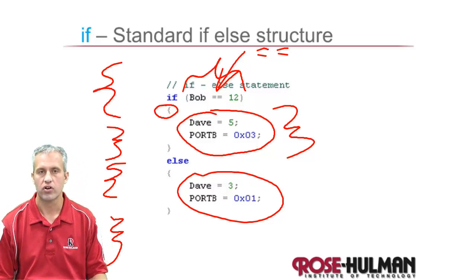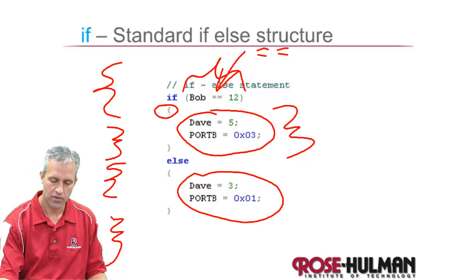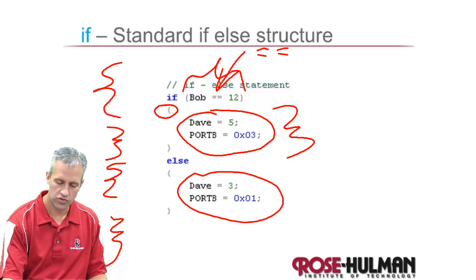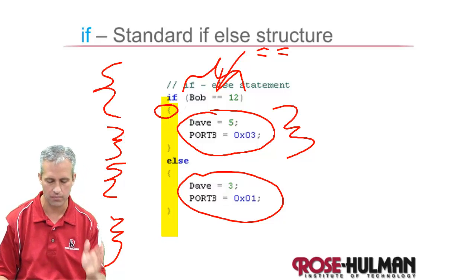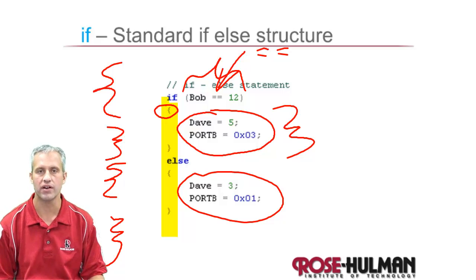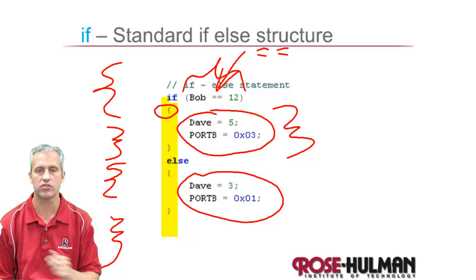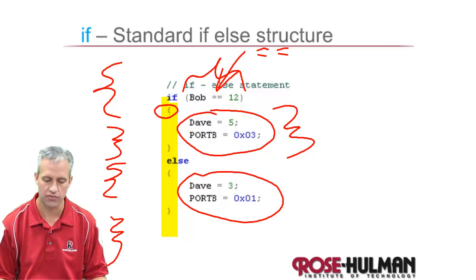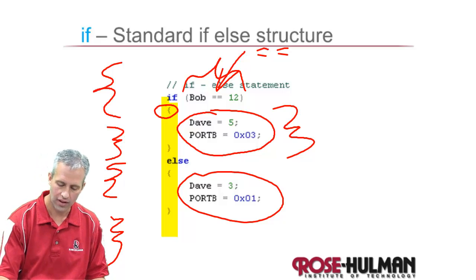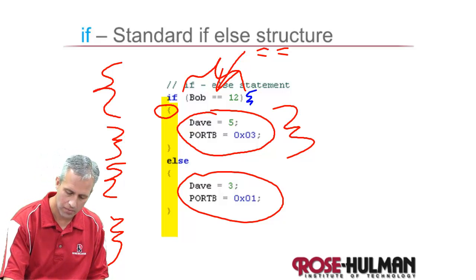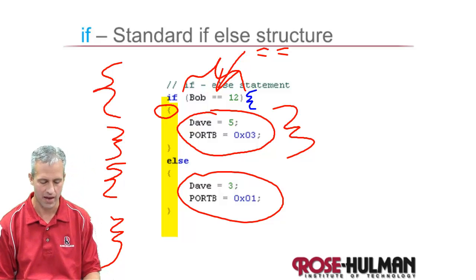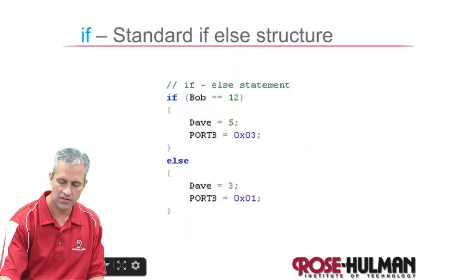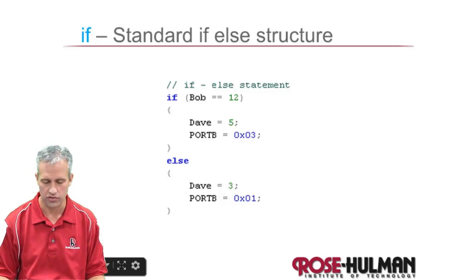So if Bob is 12, it's going to run this chunk of code. If however, Bob is some other number, not 12, you're going to run the block that's in the else statement. Again, this has an opening curly brace and a closing curly brace. This matching up of the curly braces is important. There are different ways that you can choose to write them. That's a basic if statement. That's what the syntax looks like.